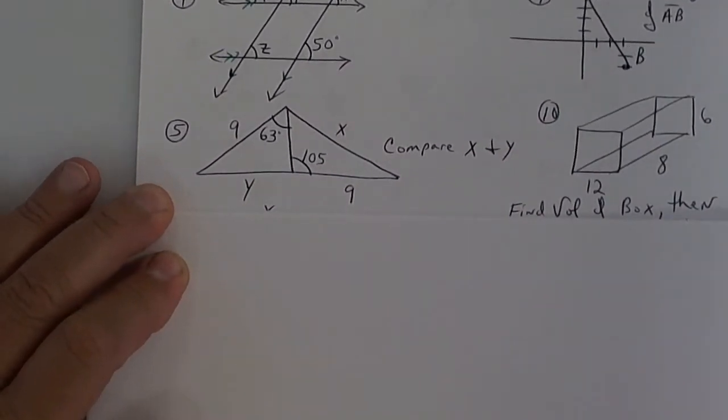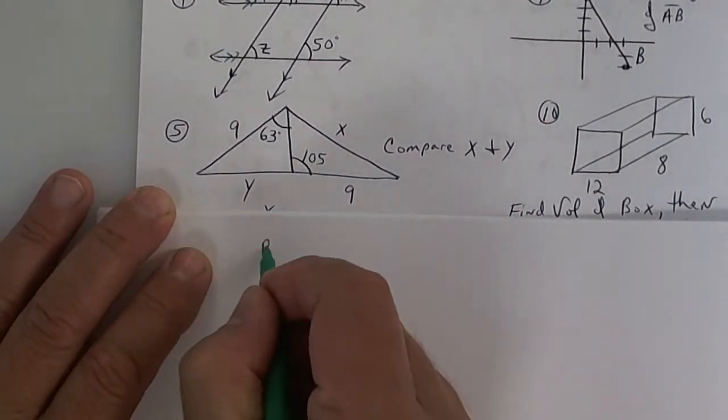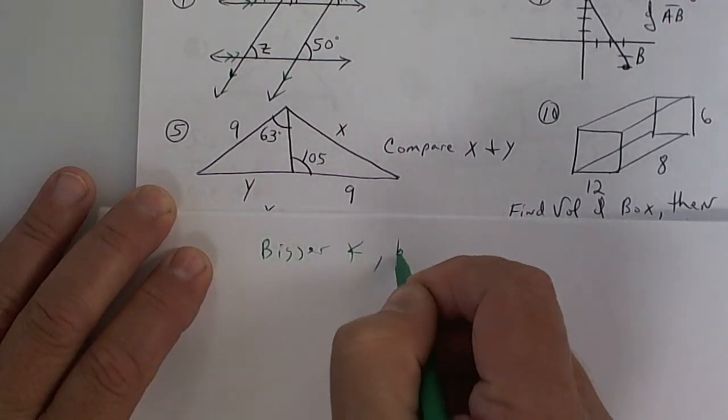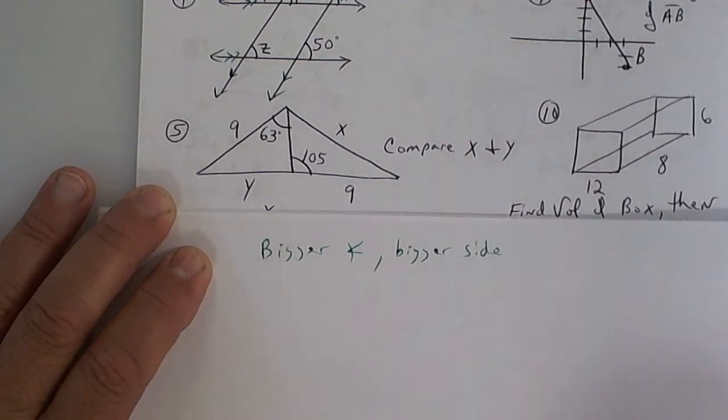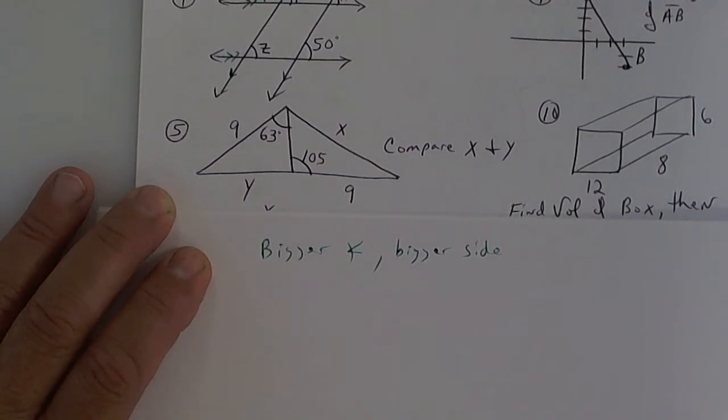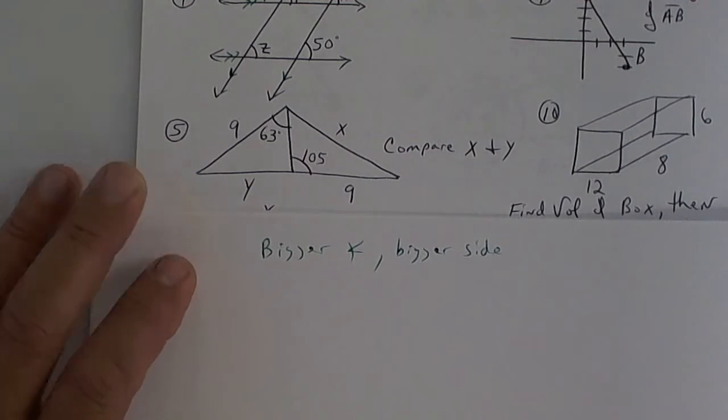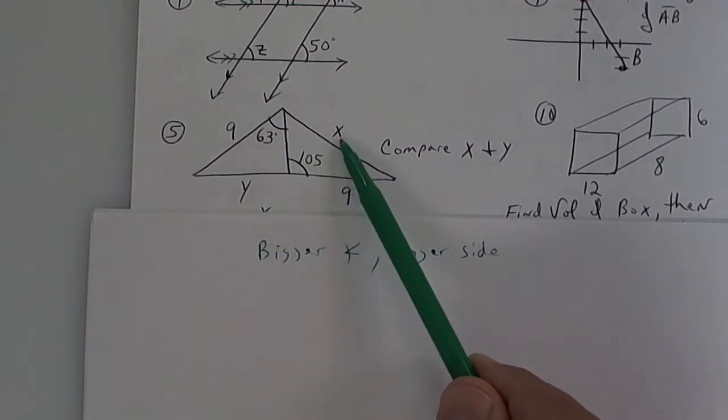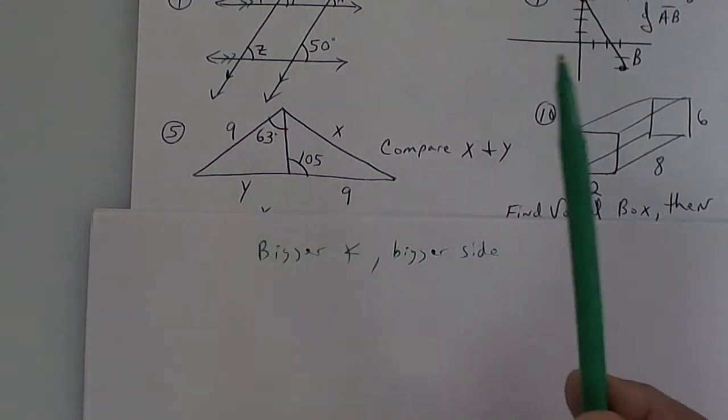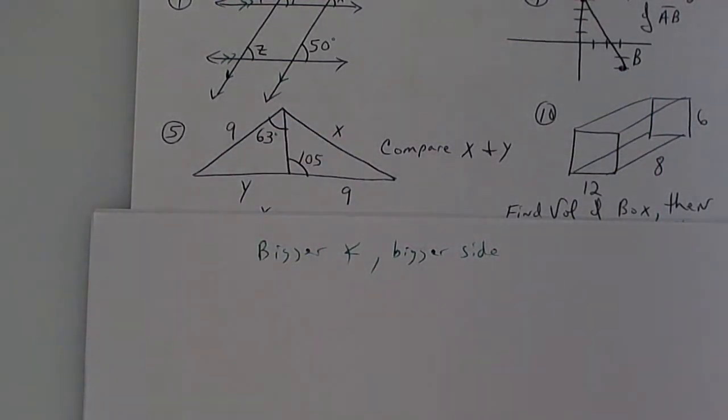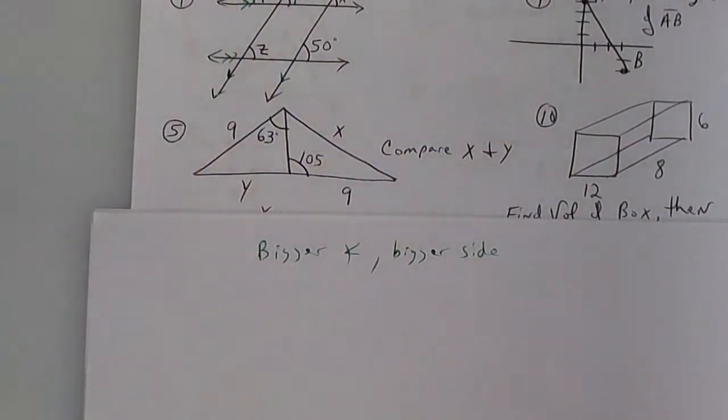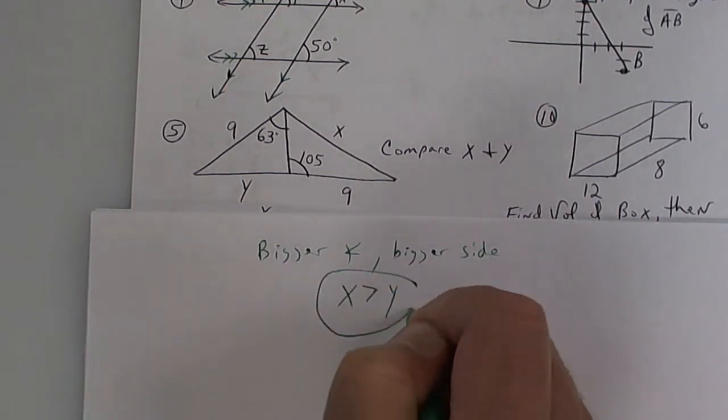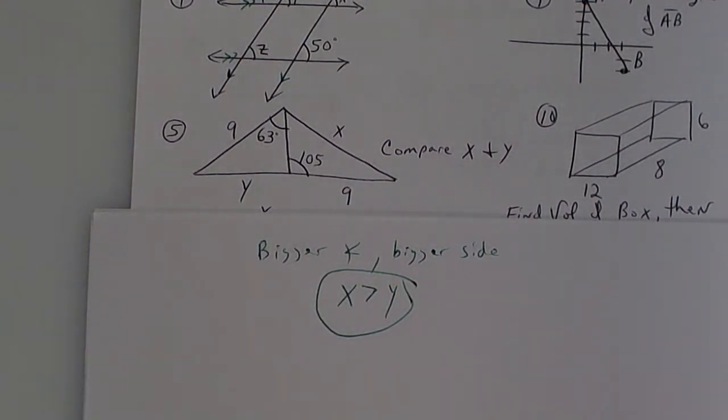Alright, look up here. Write this down. The bigger the angle, the bigger the side. It makes sense. If the angle is bigger, the side is bigger. And the converse is true. The bigger the side, the bigger the angle. Write that down and memorize that. So look up here. This one has a big angle, this one has a small angle. So that would mean this side right here would be bigger than that side. The bigger the angle, the bigger the side. The smaller the angle, the smaller the side. Is everybody clear on what I'm saying? X has to be greater than Y. That's what you're looking for. That's your answer.